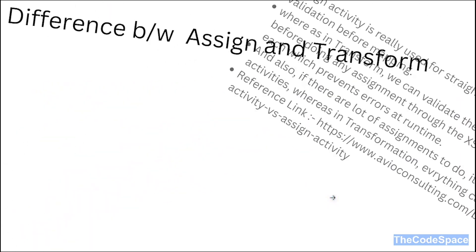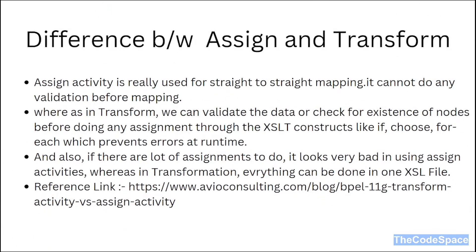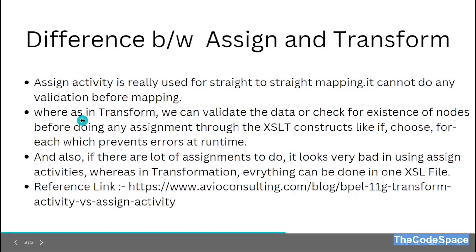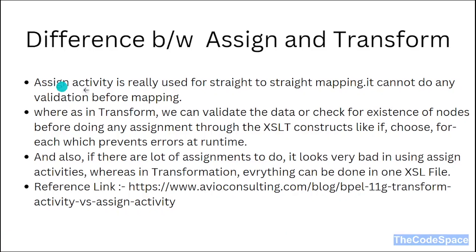Now let's see the difference between assign and transform activity — when we need to use each. Assign activity is used for straight-to-straight mapping; it cannot be used to do any validation before mapping. If the requirement involves if-else conditions before assigning to a target variable, you should use transform activity. If you have lots of assignments to do, it is also not recommended to use assign activity — use transform activity instead.